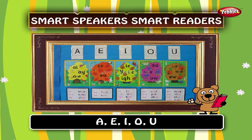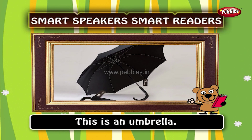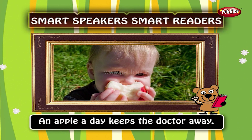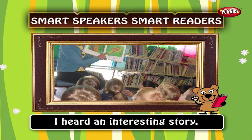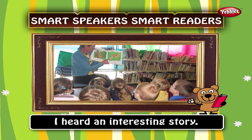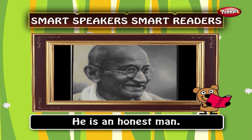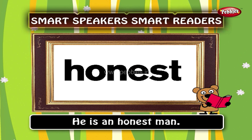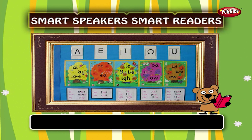For instance, this is an umbrella. An apple a day keeps the doctor away. I heard an interesting story. But then, we also say he is an honest man. Do you know why? It is because though the word 'honest' does not start with a vowel, it does start with a vowel sound.